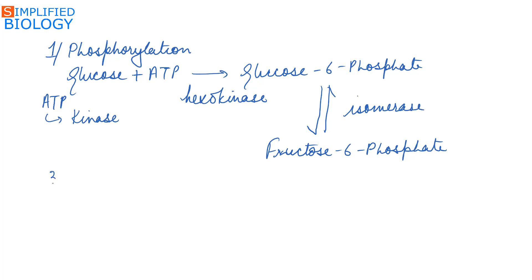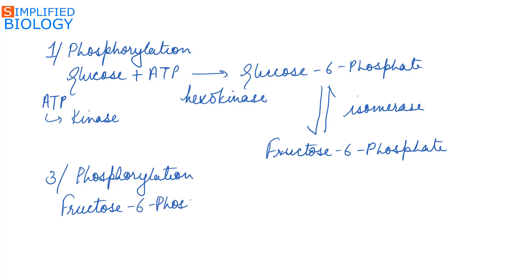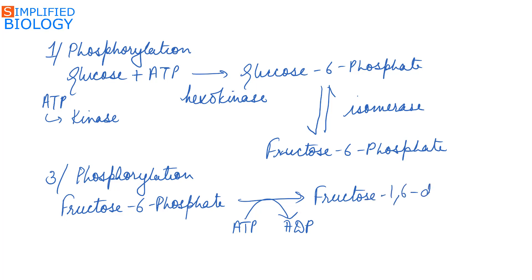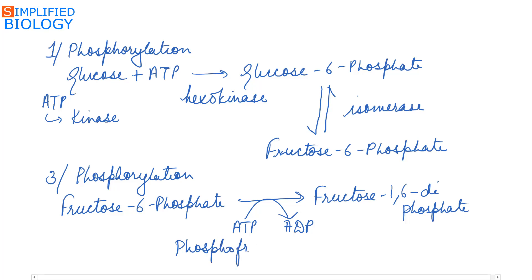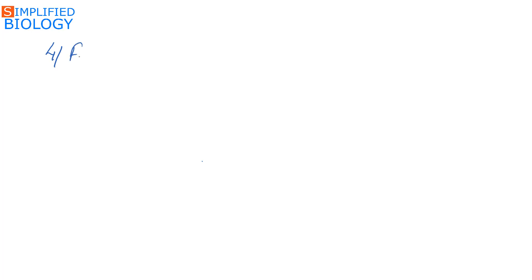Then comes another phosphorylation step, also using ATP. Fructose 6-phosphate reacts with another molecule of ATP to form fructose 1,6-diphosphate. As ATP is used here, the enzyme is named kinase along with the substrate — phosphofructokinase.